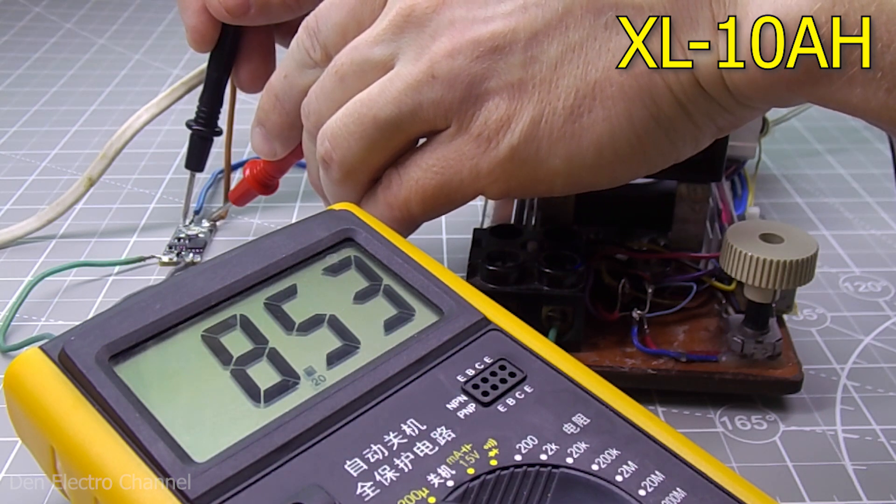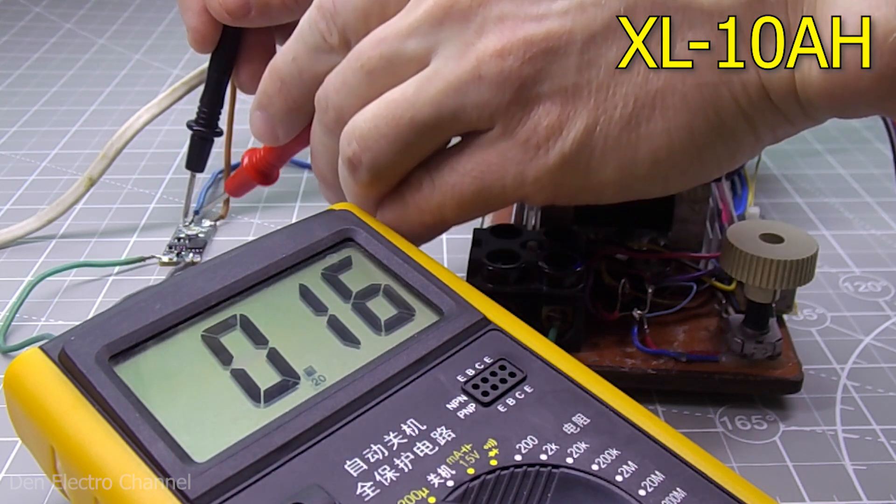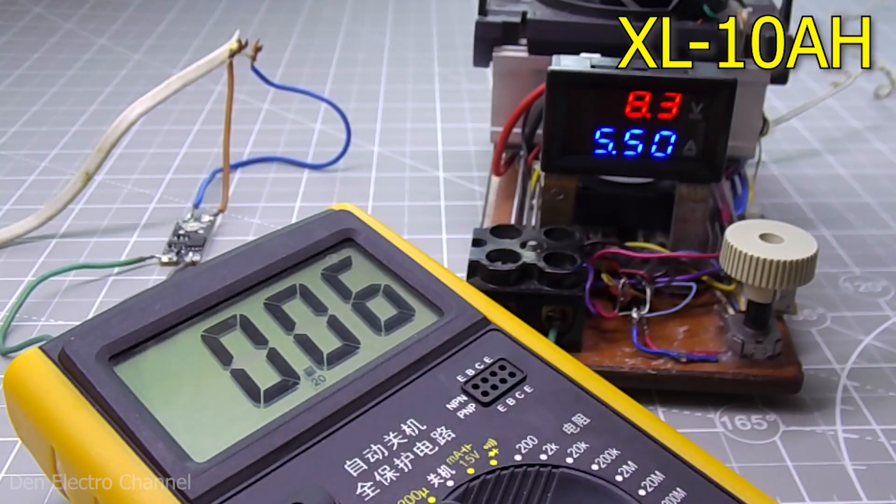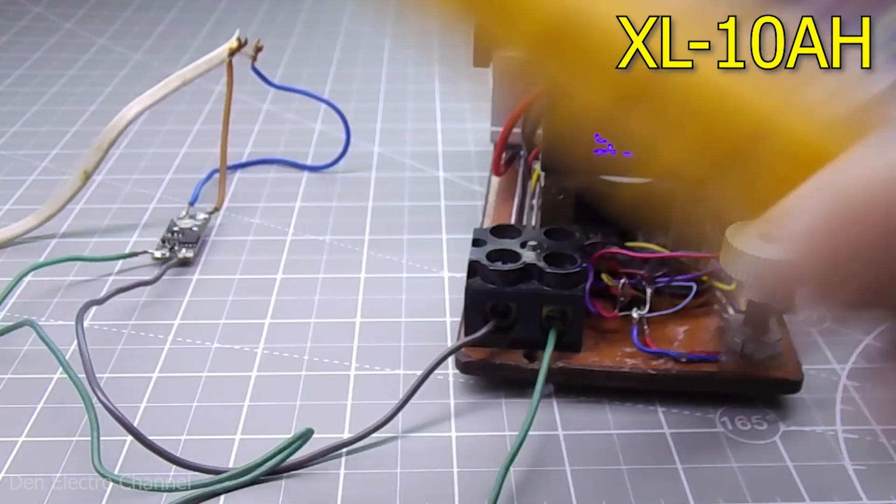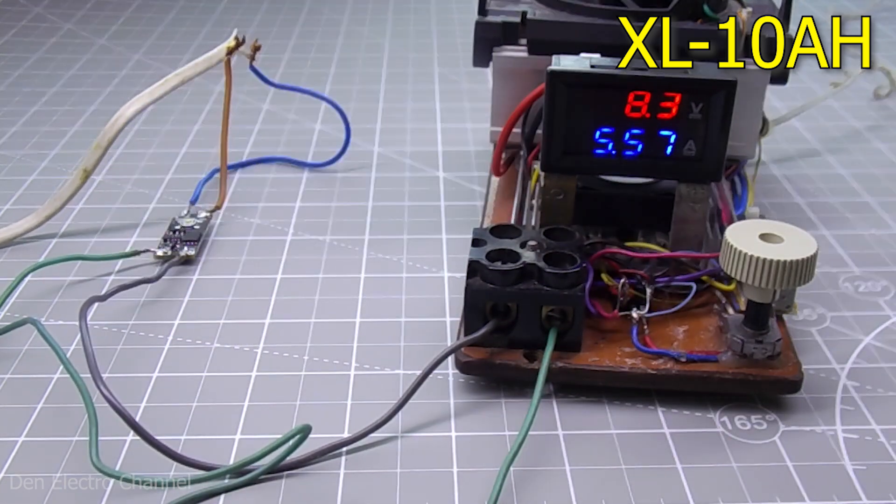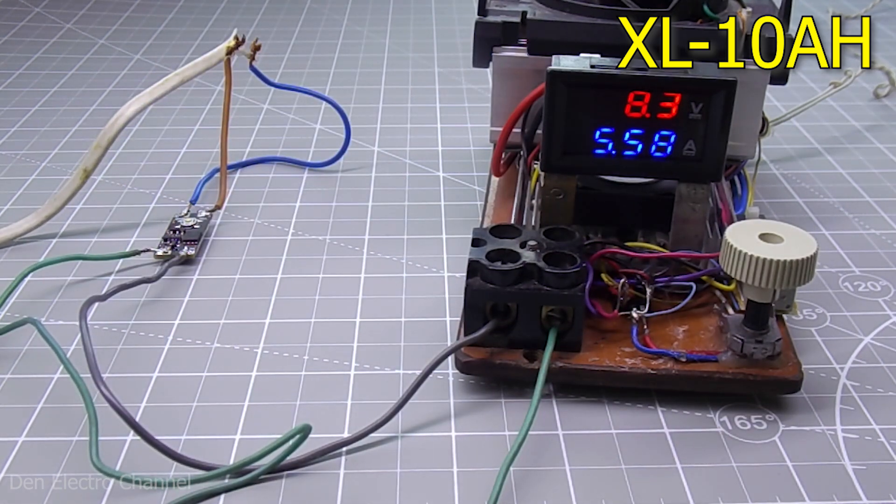The input voltage is 8.53 and the output voltage is 8.49. The difference is only 4 millivolts. The board has already warmed up, but not much. The temperature to the touch is approximately 40 degrees Celsius.